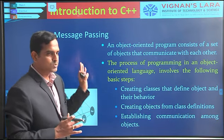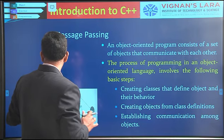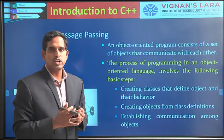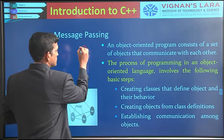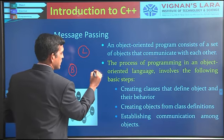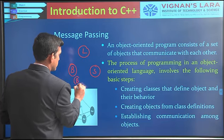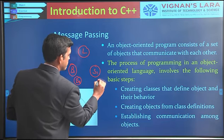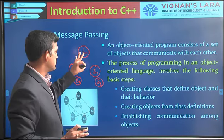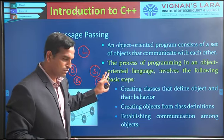The next OOP concept is message passing. Object oriented programs consist of a set of objects that communicate with each other. For example, in a library information system you will have a librarian object, multiple book objects, and multiple student objects. These objects communicate with one another based upon the processes. The process of programming in an OOP language involves: first, creating your classes; then creating objects from those classes; and then establishing communication between those objects.